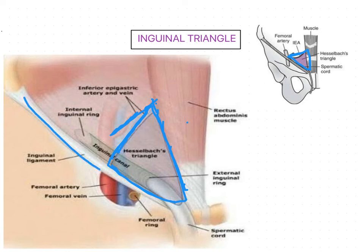Coming to the inferior border of this inguinal triangle — it is related to the medial half of the inguinal ligament. This is the inguinal ligament. This portion will have the mid-inguinal point. So the inferior border of Hesselbach's triangle is related to the medial half of the inguinal ligament.